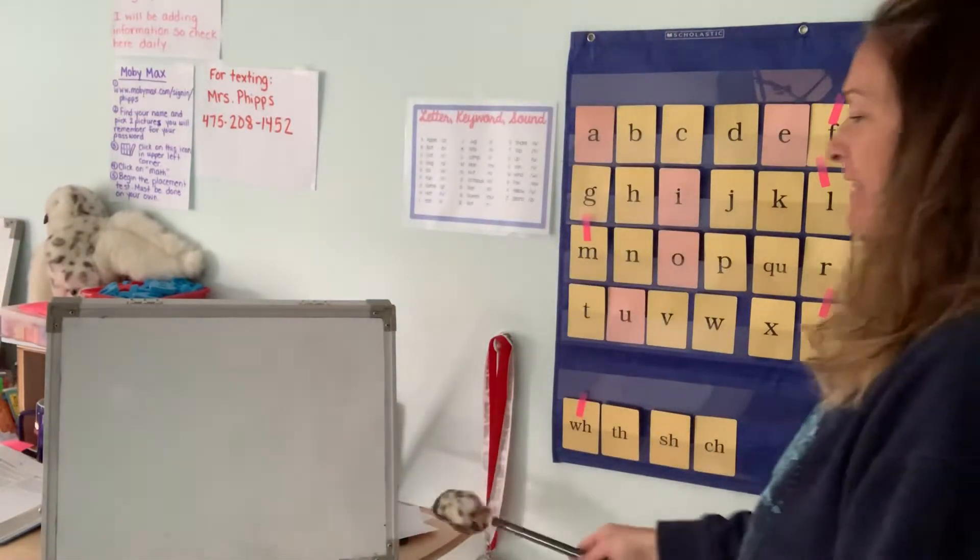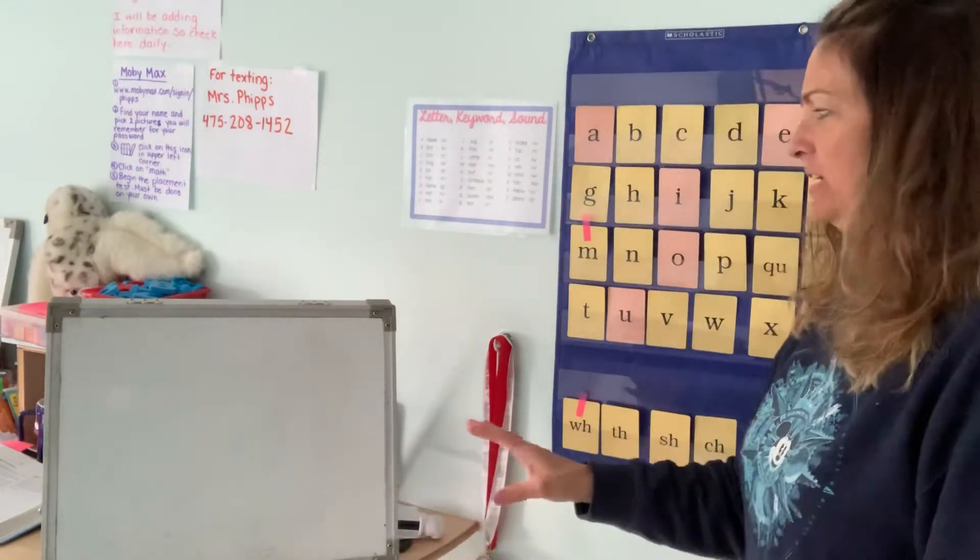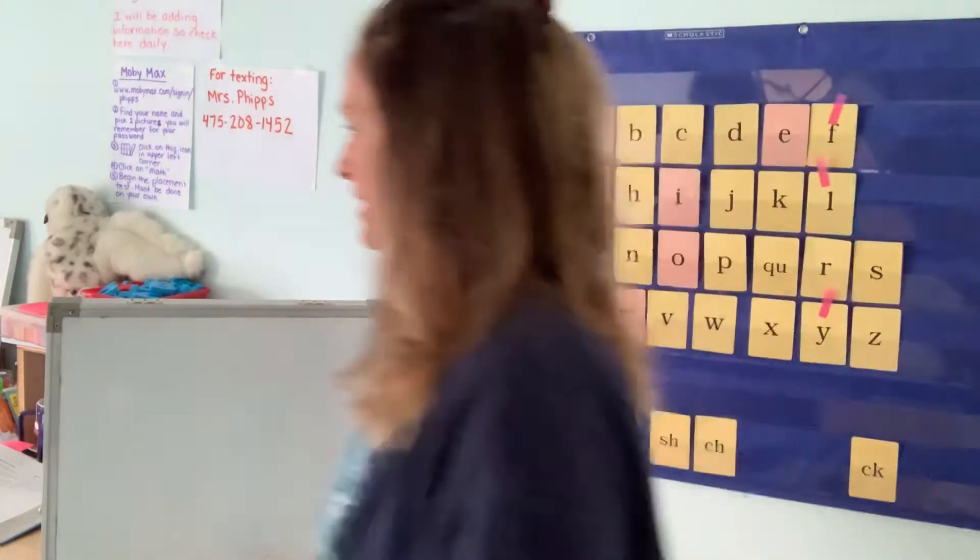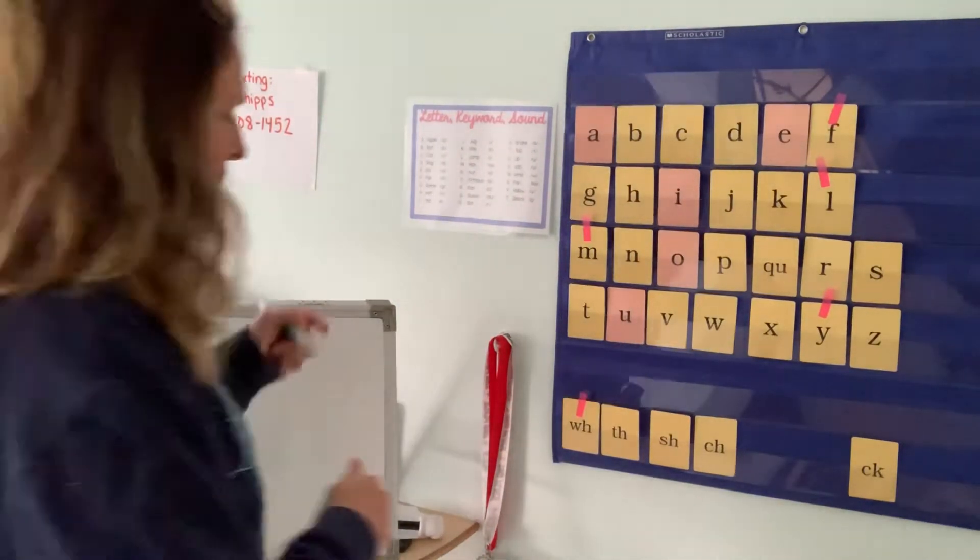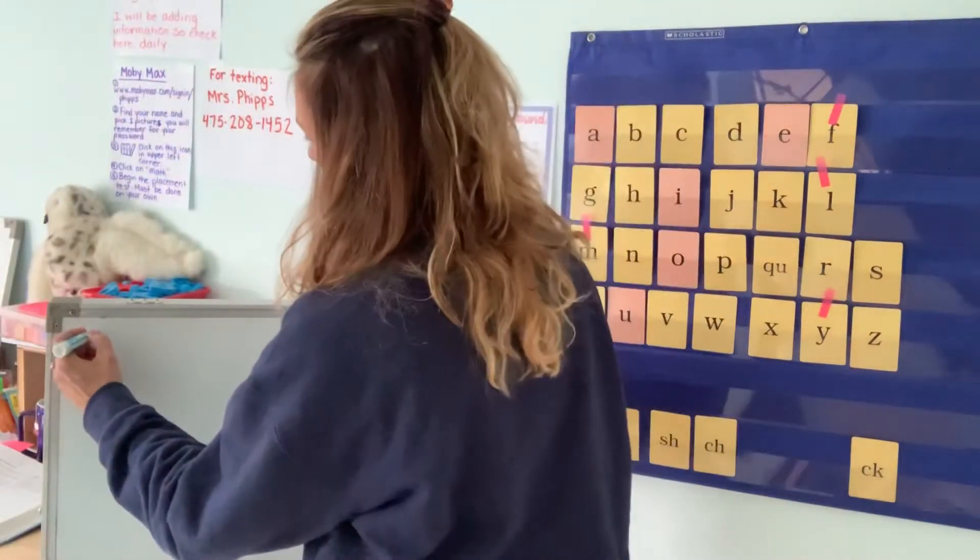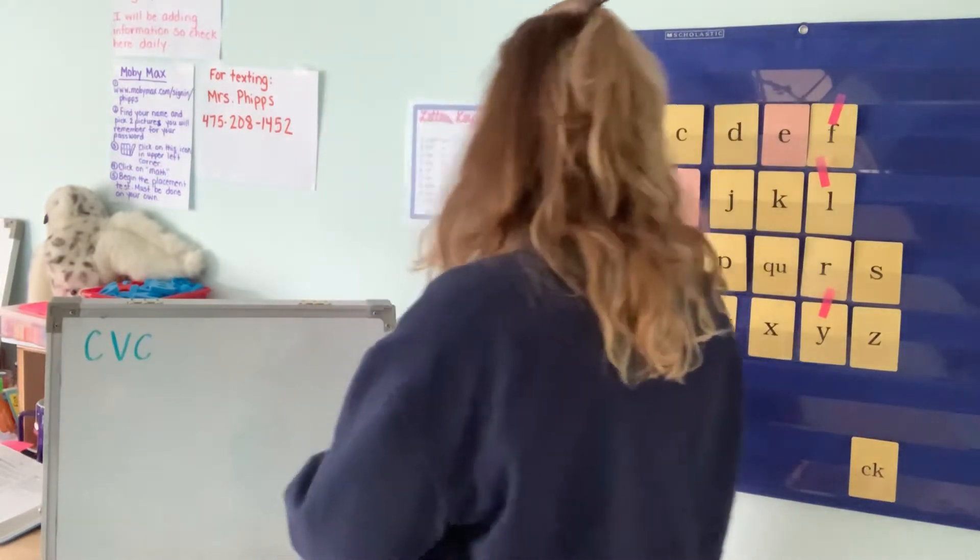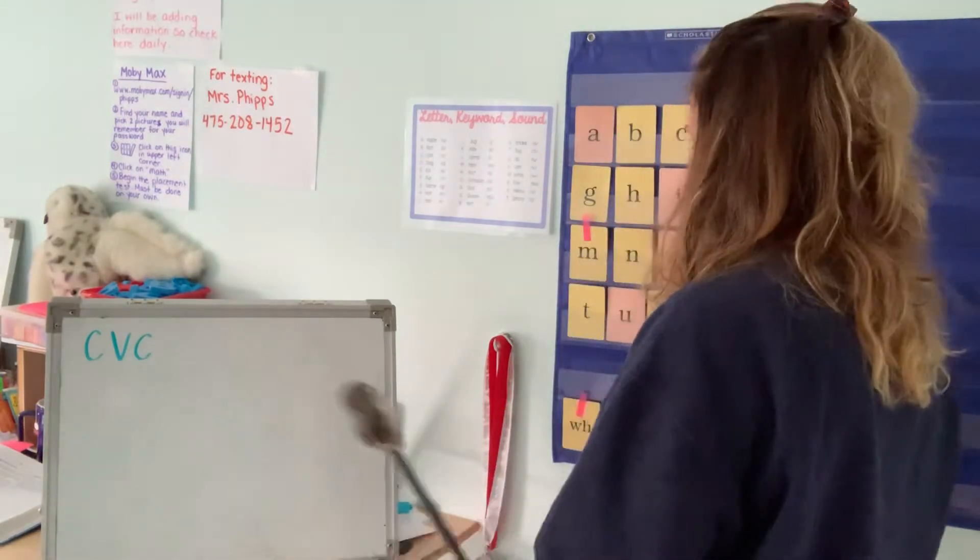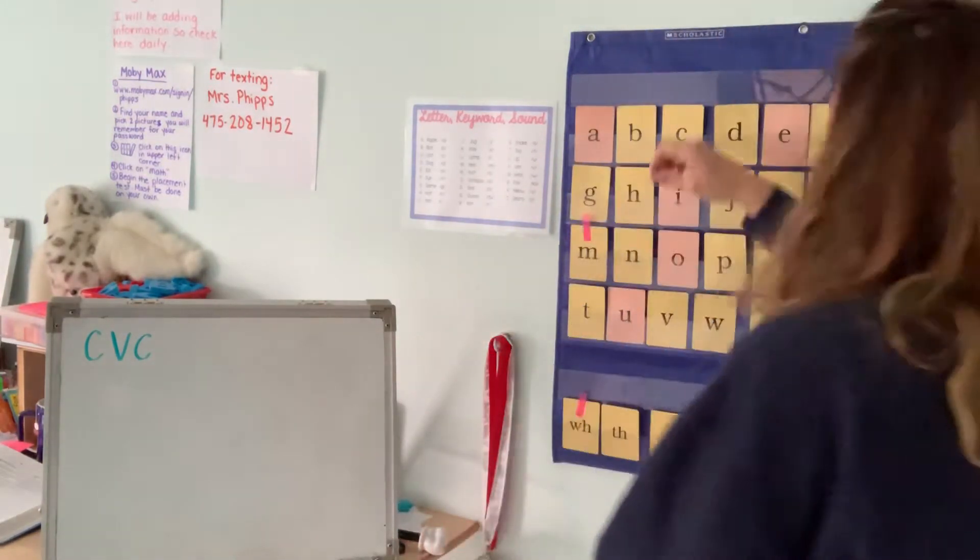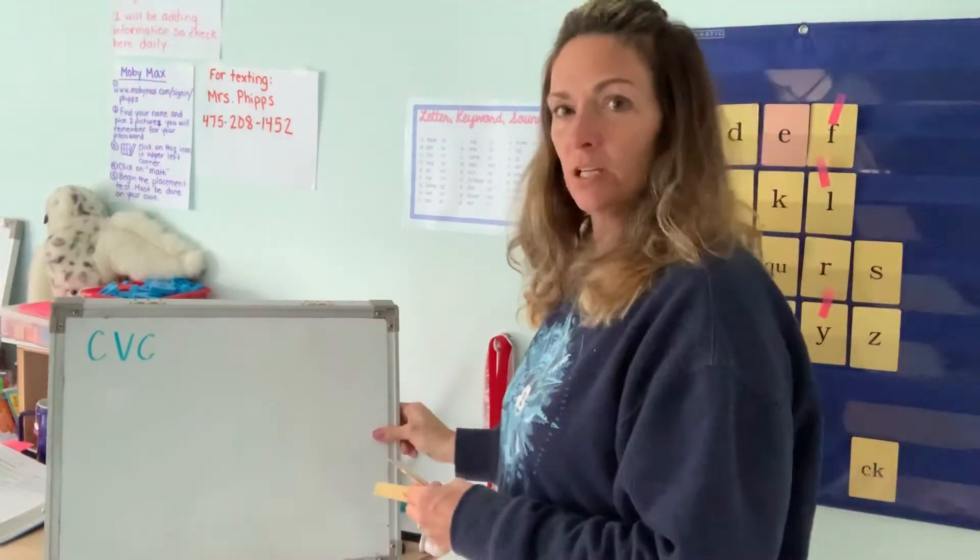The next thing we're going to do is I'm going to be making some CVC words. So remember, it's going to be consonant, vowel, consonant. Remember, we put the owl on the vowel. Consonant, vowel, consonant. The first word we are going to build is not that tricky.